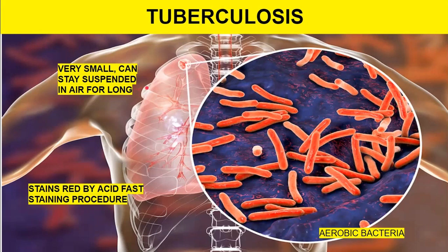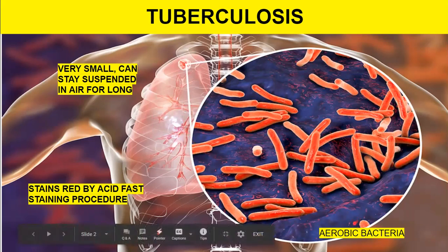The bacteria that causes tuberculosis are very small and very lightweight — unlike coronavirus, which settles down on material. The TB bacteria do not settle down quickly; they stay suspended in air for a pretty long time. Since it is a disease of the lungs, it is aerobic bacteria, which is why it thrives in the lungs where oxygen is in abundant quantity.